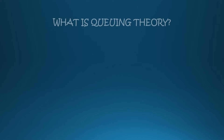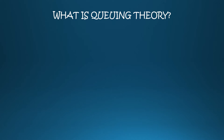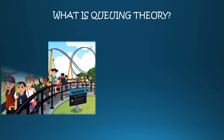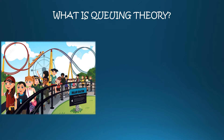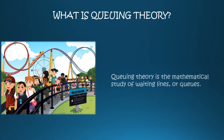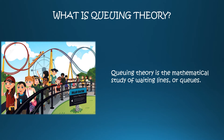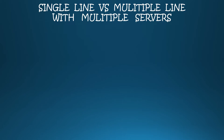What is queuing theory? Queuing theory is the mathematical study of waiting in lines or queues. It is a prediction of queue waiting times and can be used to make business decisions about needed resources. Queuing theory involves multiple models including single and multiple lines, single and multiple servers, and any combination of the two.